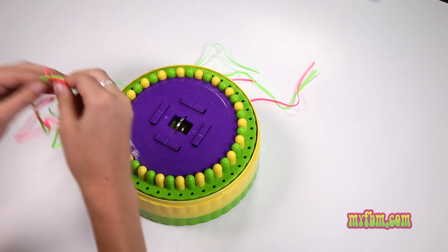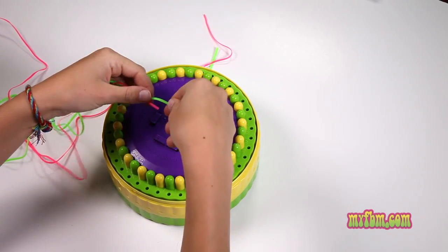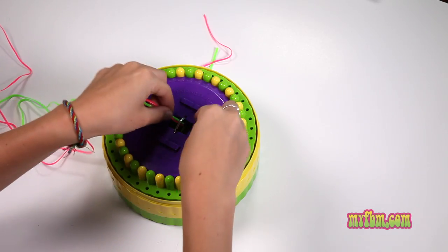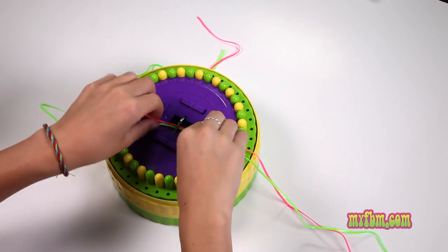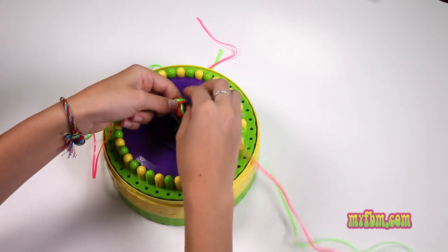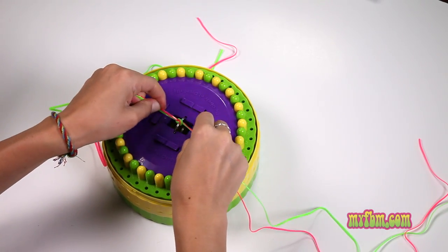Place the keyring snugly in the middle and feed the laces through. Tie a knot in the center and make sure to pull it nice and tight.